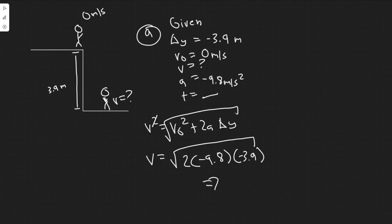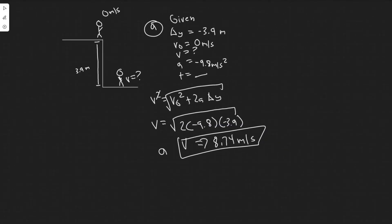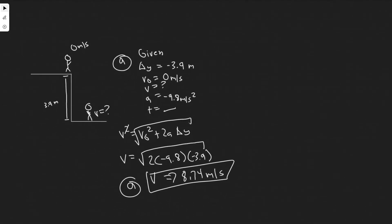Plugging into the calculator: 2 times minus 9.8 times minus 3.9. When you do this, you get a value of 8.74. So the velocity is 8.74 meters per second. This is the velocity right before the feet strike the ground — and obviously it's directed downward. So 8.74 meters per second downward is the answer to Part A.